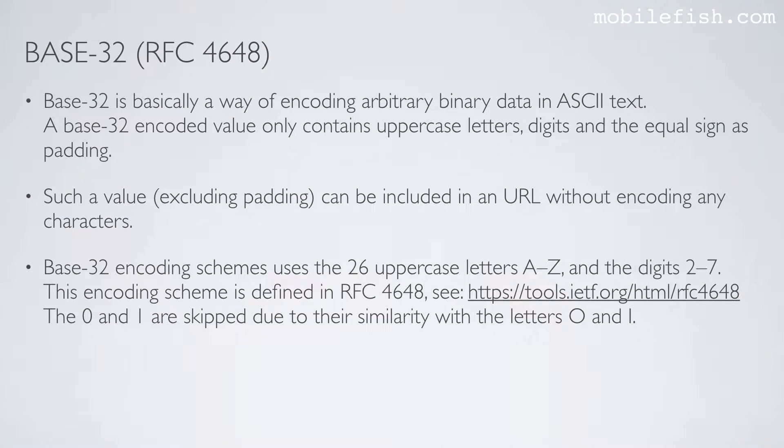Base32 encoding scheme uses the 26 uppercase letters A to Z and the digits 2 to 7. This encoding scheme is defined in RFC 4648, see this link for more information. The values 0 and 1 are skipped due to their similarity with the letters O and I.